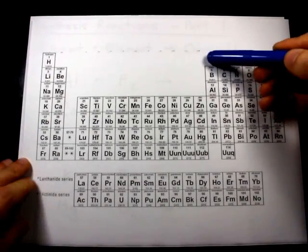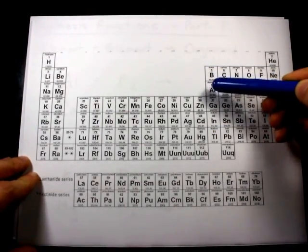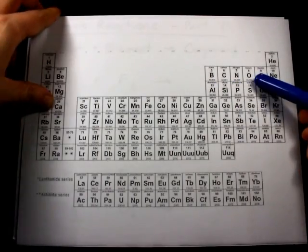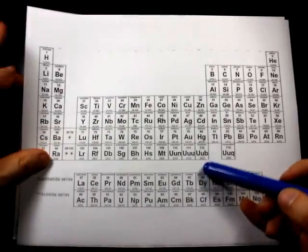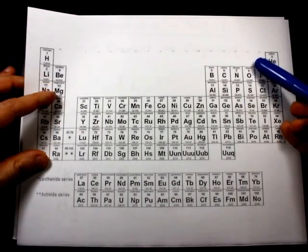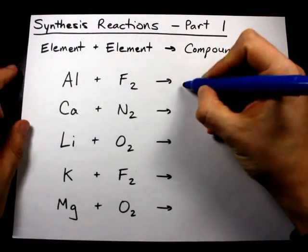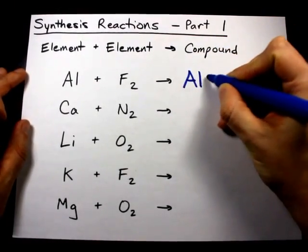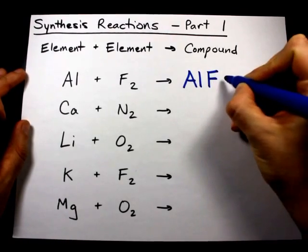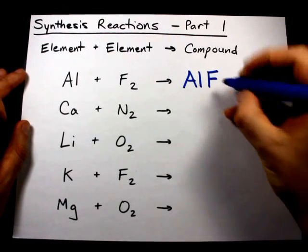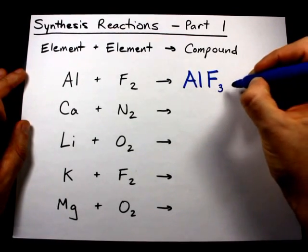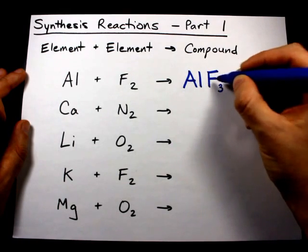Aluminum, being in this group, would prefer a charge of plus 3, and fluorine, which is what it's reacting with, prefers a charge of minus 1, because it is a halogen. Aluminum 3+ and fluorine 1- crisscross the charges to make AlF3. This is aluminum fluoride.